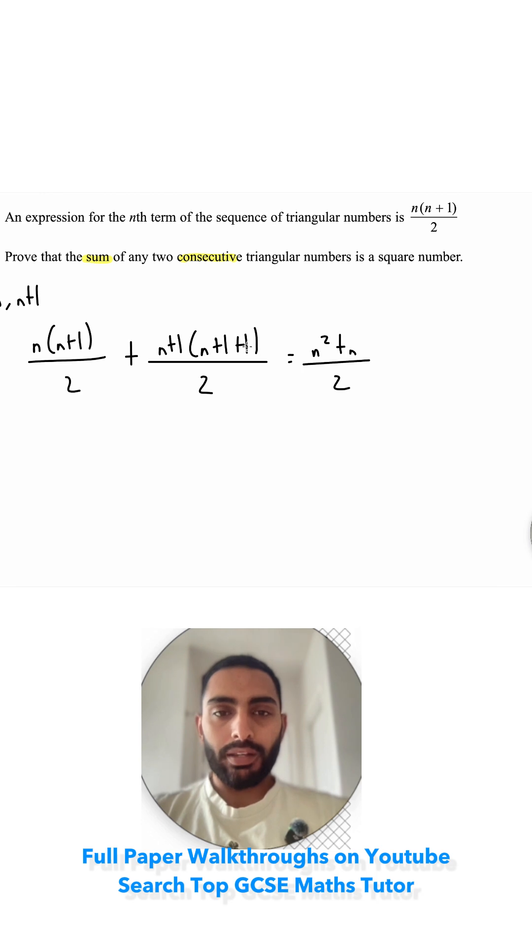Then for this one, we're going to clean up this bit inside the bracket, so n+1+1 would become n+2. So I've got (n+1) for my first bracket, and then (n+2) for my second bracket. That's over 2.